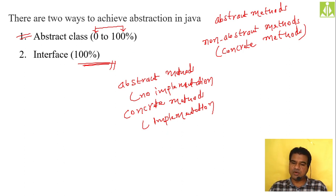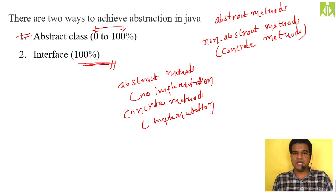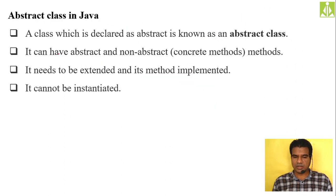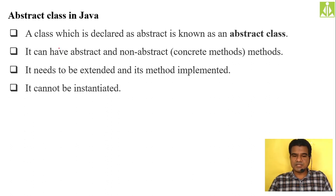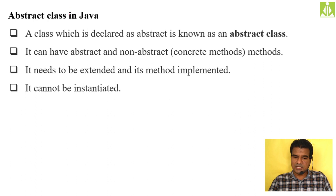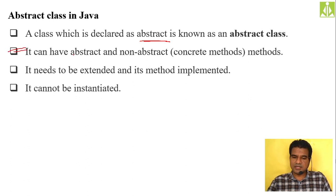There are two types of methods: abstract methods and non-abstract methods. Non-abstract methods are also called concrete methods. Concrete methods have a body and implementation, but abstract methods have no body — no implementation at all. An abstract class can have both abstract and non-abstract methods; an interface will have only abstract methods, which is why using abstract classes achieves 0 to 100% abstraction while interfaces achieve 100% abstraction.